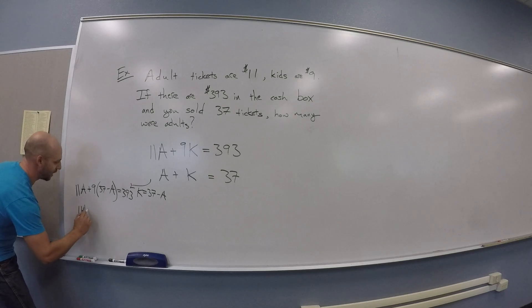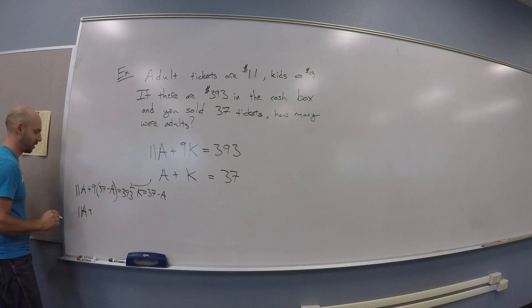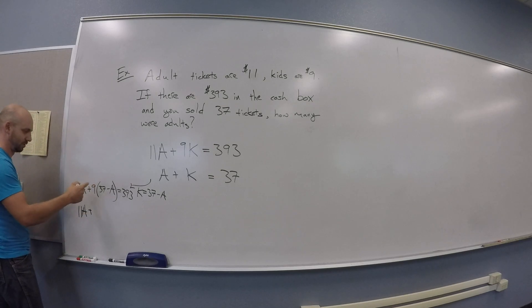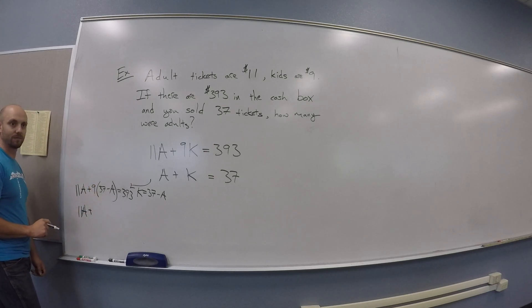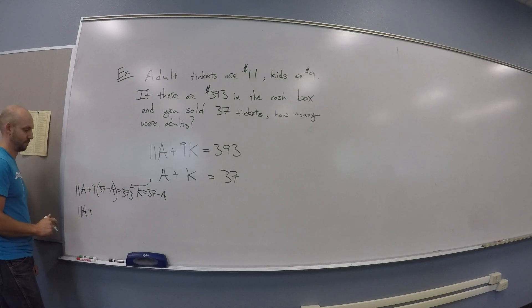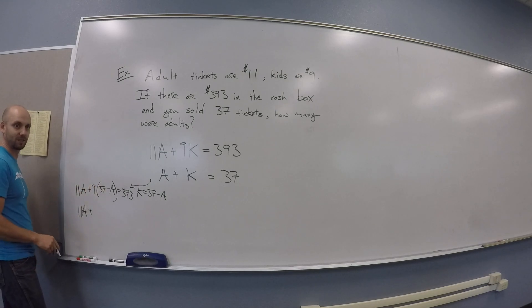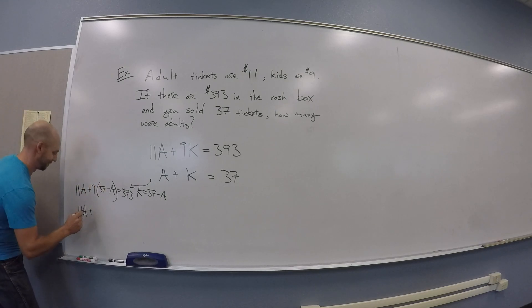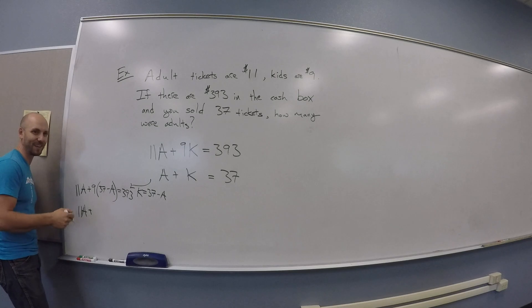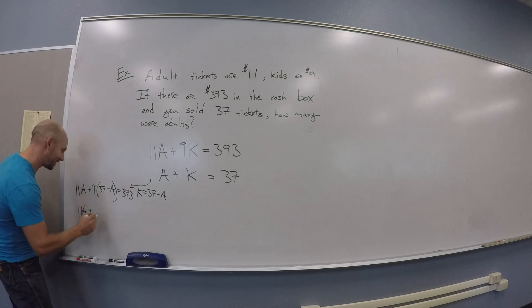Take that information and shove it into the top equation. This is called substitution. So you get 11a plus 9 times (37 minus a) equals 393. And then you can distribute. So you get 11a plus whatever 9 times 37 is. I was hoping one of you guys would be really on this.